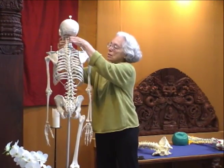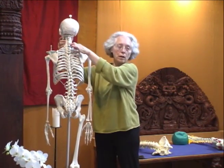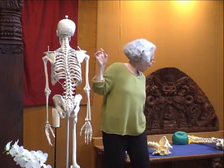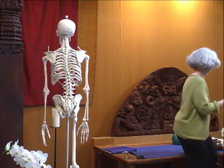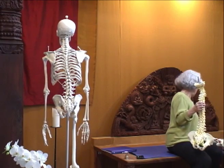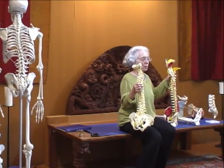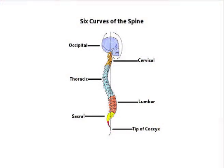Traditionally, these are the only curves that are seen. I'm going to come back to this one because I love that in the models they include the occipital bone as the top cervical vertebrae — the occiput being the top vertebrae of the spine.